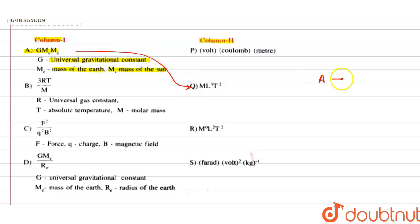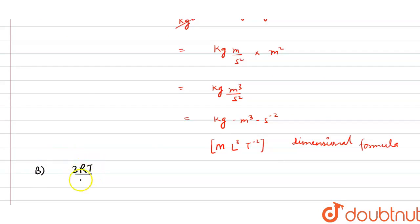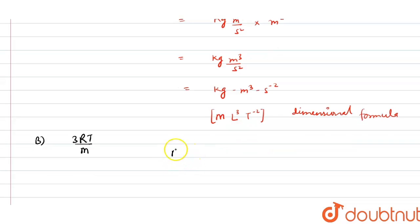Now option B is 3RT/M, where R is the universal gas constant, T is the absolute temperature, and M is the molar mass. We write R from the ideal gas law PV = nRT, giving R = PV/T.